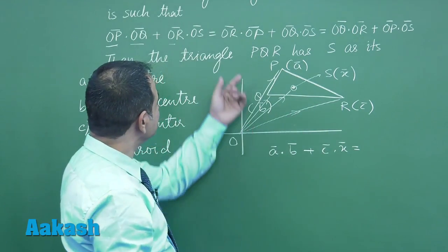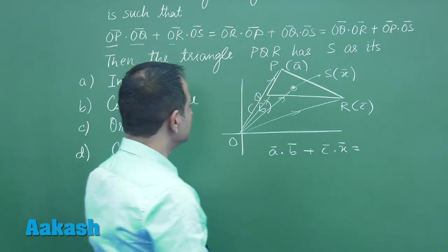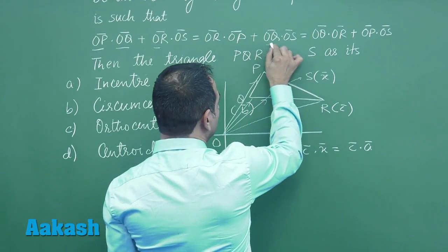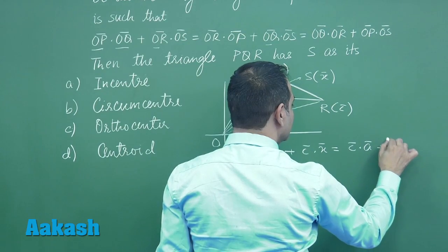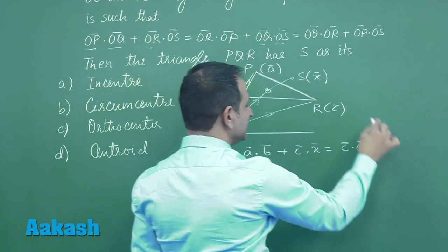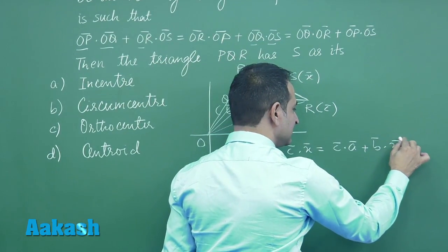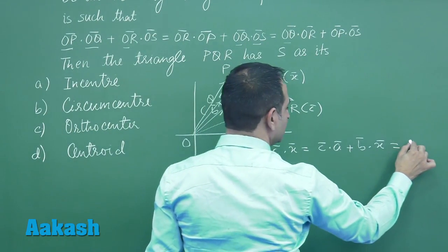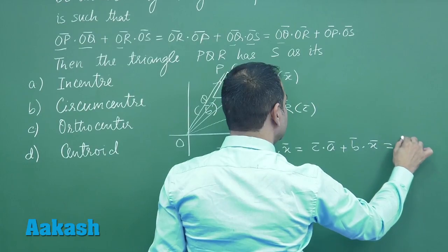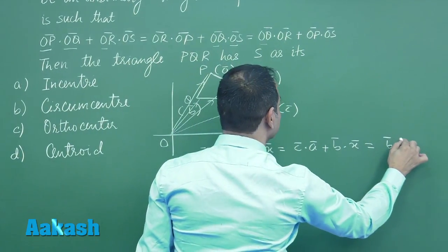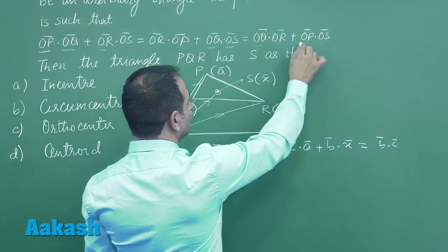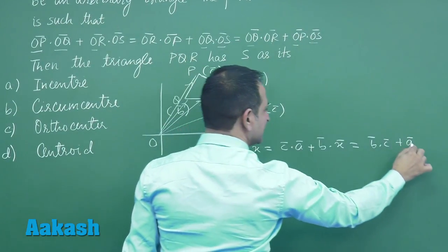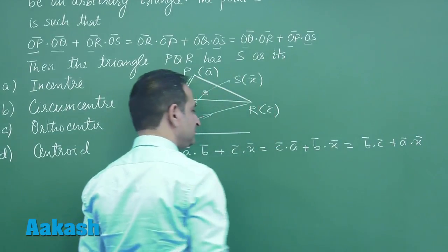OQ - what is OQ? It is b. OR is again c and OS is x. You can see clearly from here, again placing the value: OR is c, OP is again a, and again OQ is b and OS is x. Similarly we have OQ which is b, and OR is c, and finally OP which is again a, and OS is again x.